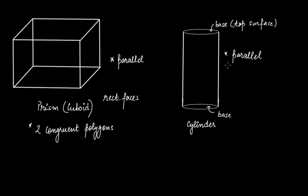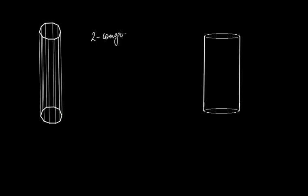In the case of the cuboid, the base and top surface have four sides because these are rectangular faces. But what happens when we increase the number of sides? If we take polygons with more and more sides — like in this case we have 10 sides — this polygon has 10 sides, and the same thing is here, so we have two congruent polygons that have 10 sides.